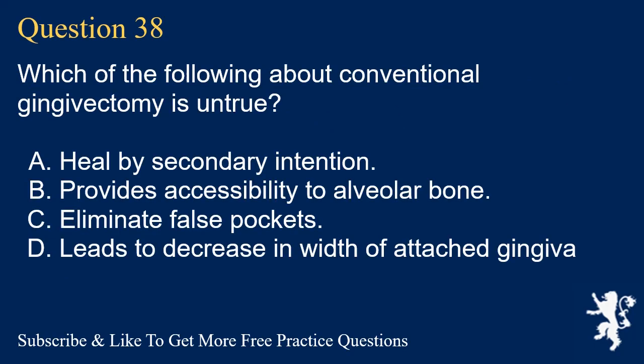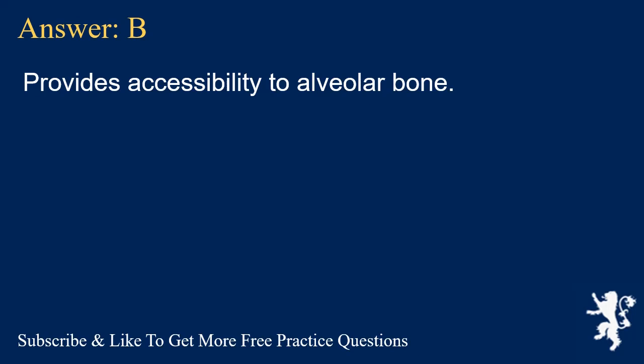Question 38. Which of the following about conventional gingivectomy is untrue? A. Heals by secondary intention. B. Provides accessibility to alveolar bone. C. Eliminates false pockets. D. Leads to decrease in width of attached gingiva. Answer: B. Provides accessibility to alveolar bone.